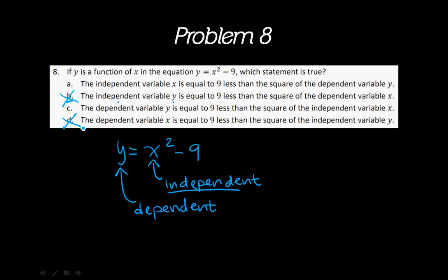And if you just read the first few words, you'll get the answer. If we read A, it says the independent variable x, which is good. x is independent. Is equal to. Do you see x equal to anything? Like, you don't see this, right? So that's not really describing what's going on. If we look at C, it says the dependent variable y is true. That's dependent.